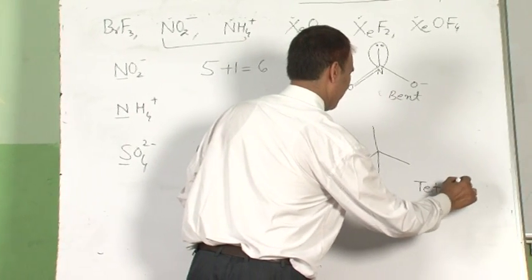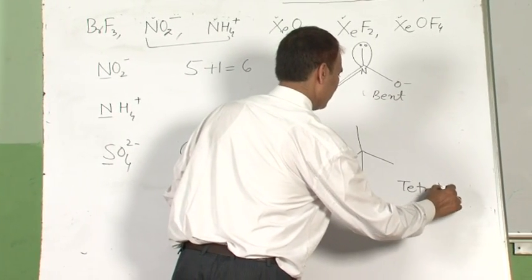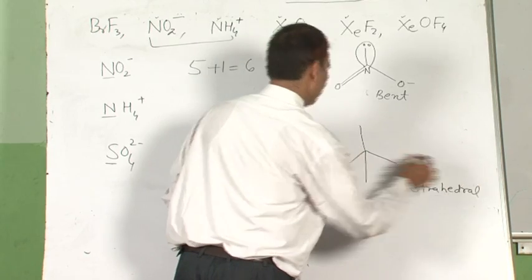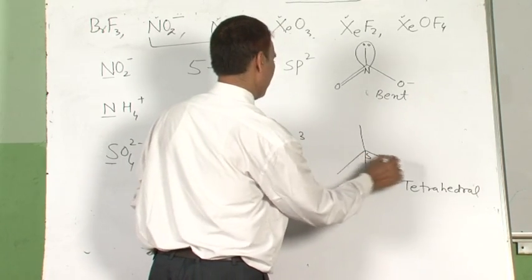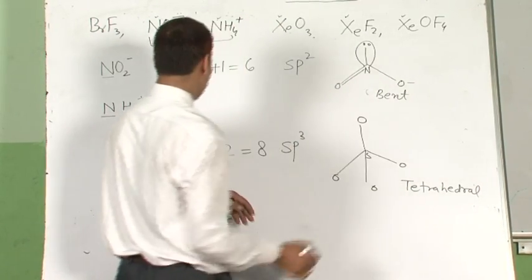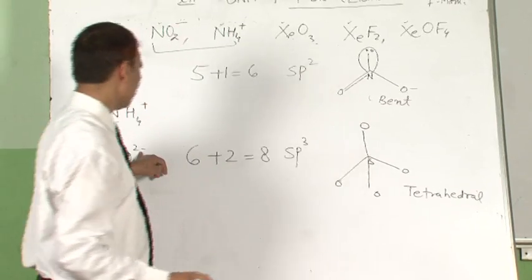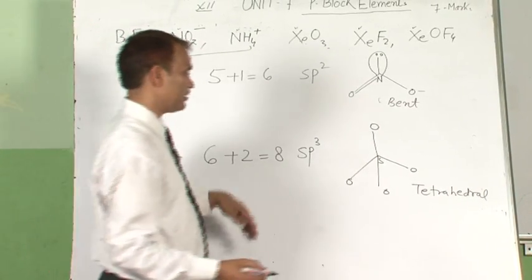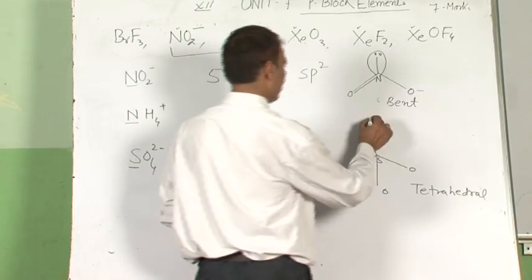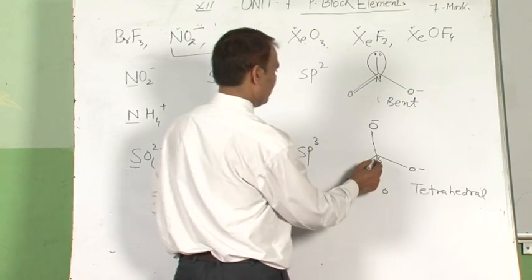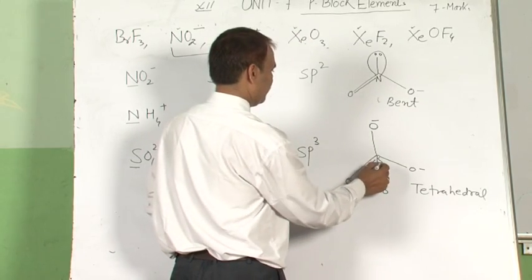No lone pair — tetrahedral. So it will be sulfur with oxygen, oxygen, oxygen, oxygen. Put any 2 minus charge on any 2 oxygen atoms. The remaining oxygen will be double bonded.